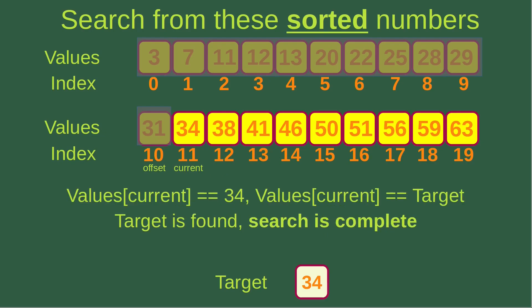The current index gives me a value of 34, which is equal to the target. It means the target can be found at index 11, and the search is complete.